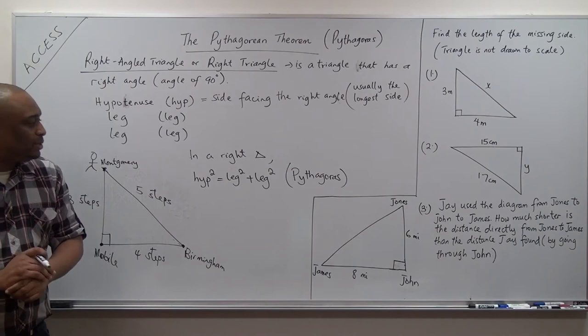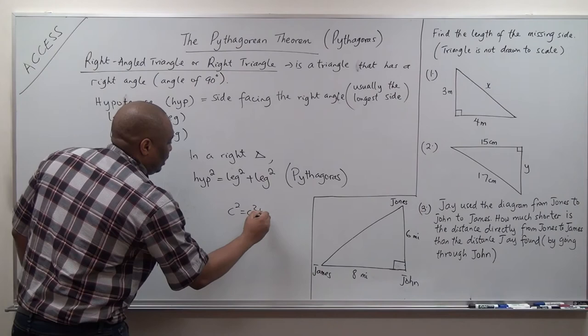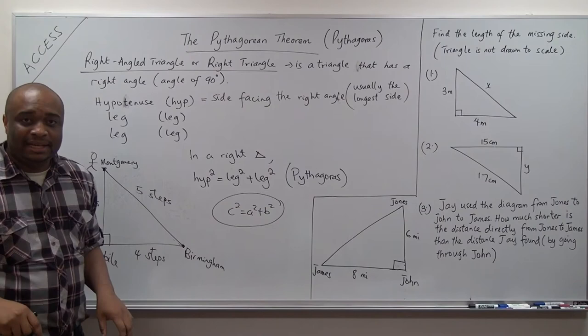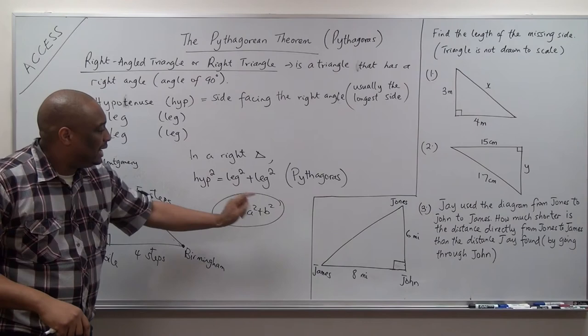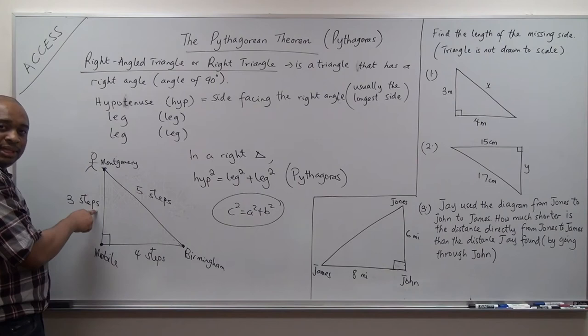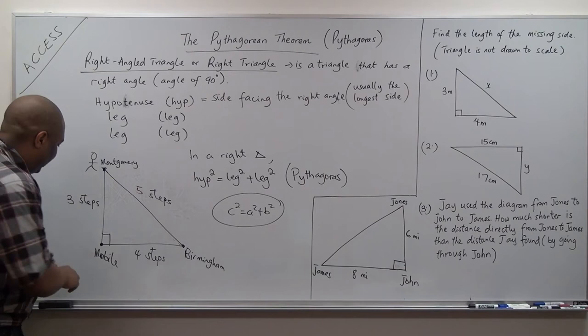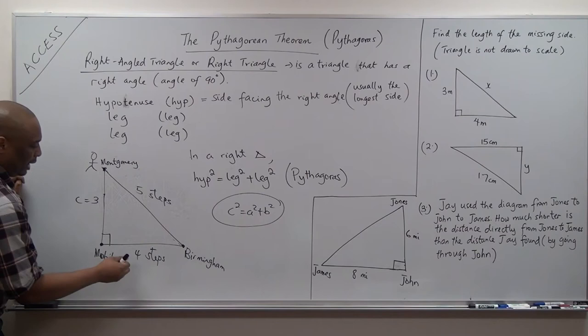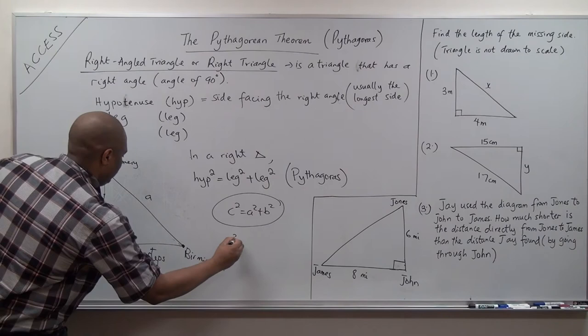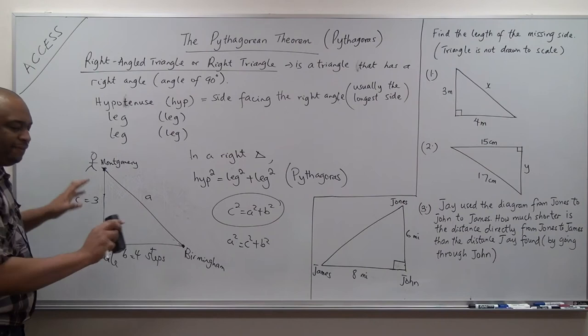Some teach this as c squared equals a squared plus b squared, and I point that out because it's on the reference formula page. But if someone wants to confuse you, they'll just change the variables. They might put c equal to one value, b equal to another, and ask you to find a — and then you can't just plug in without understanding. A, b, and c are just variables; someone could say d squared equals e squared plus f squared.